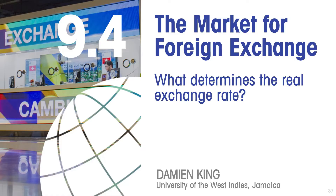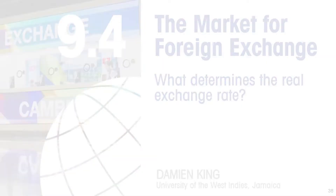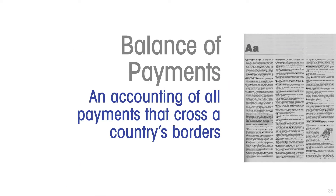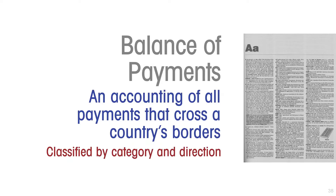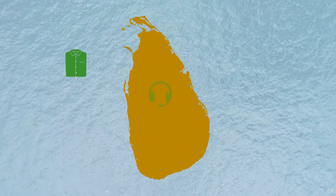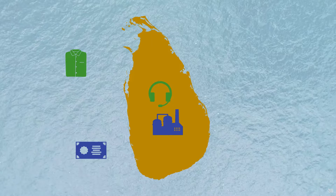What determines the real exchange rate? To answer that, we need the market for foreign exchange. To set that up, we need the balance of payments. The balance of payments is an accounting of all the payments that cross our country's borders, classified by category and direction. What are the main payments that cross our country's borders and the purposes for which those payments are made?